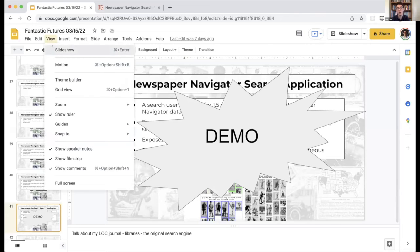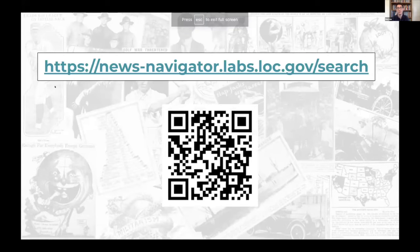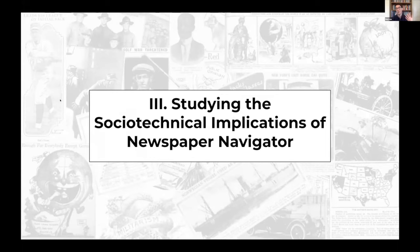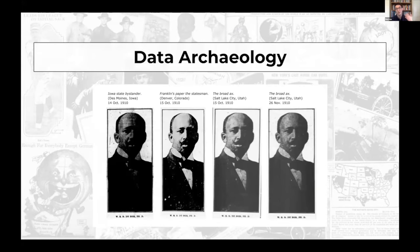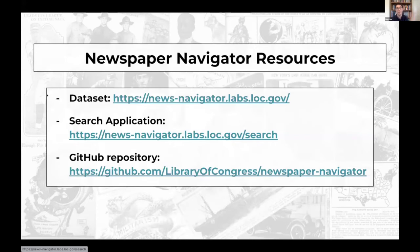One part of this project I've been most excited about is exploring the sociotechnical implications — understanding marginalization and bias, and the environmental impact of this work. I wrote what I call a data archaeology, tracing four reproductions of the same photo of W.E.B. Du Bois as reproduced in Black newspapers in Chronicling America. There's a pointer to a Digital Humanities Quarterly piece on this.